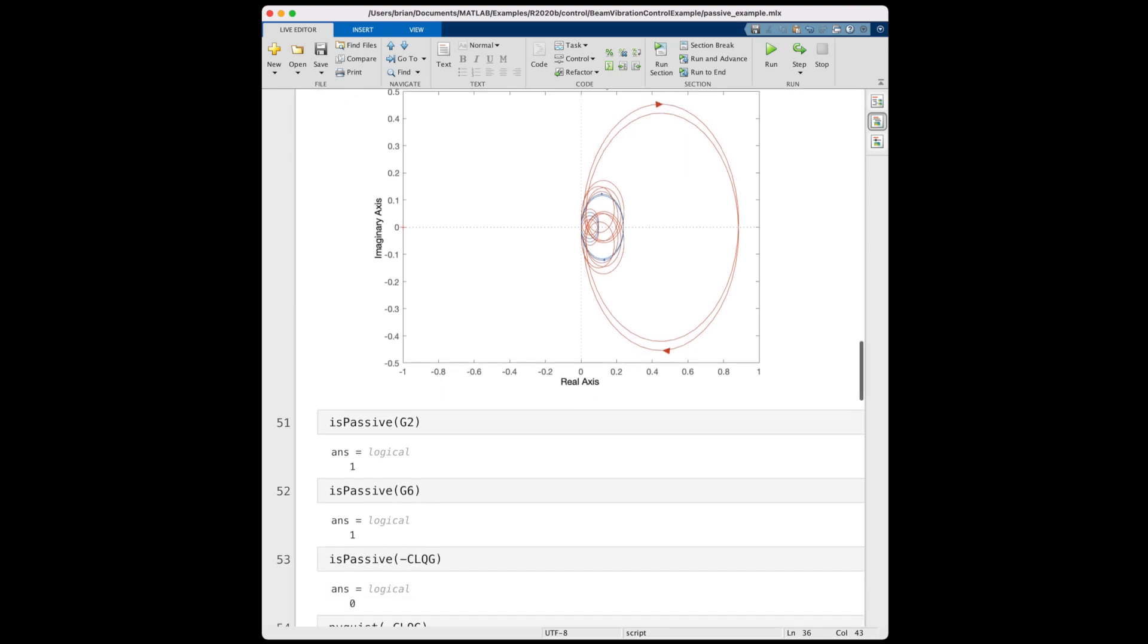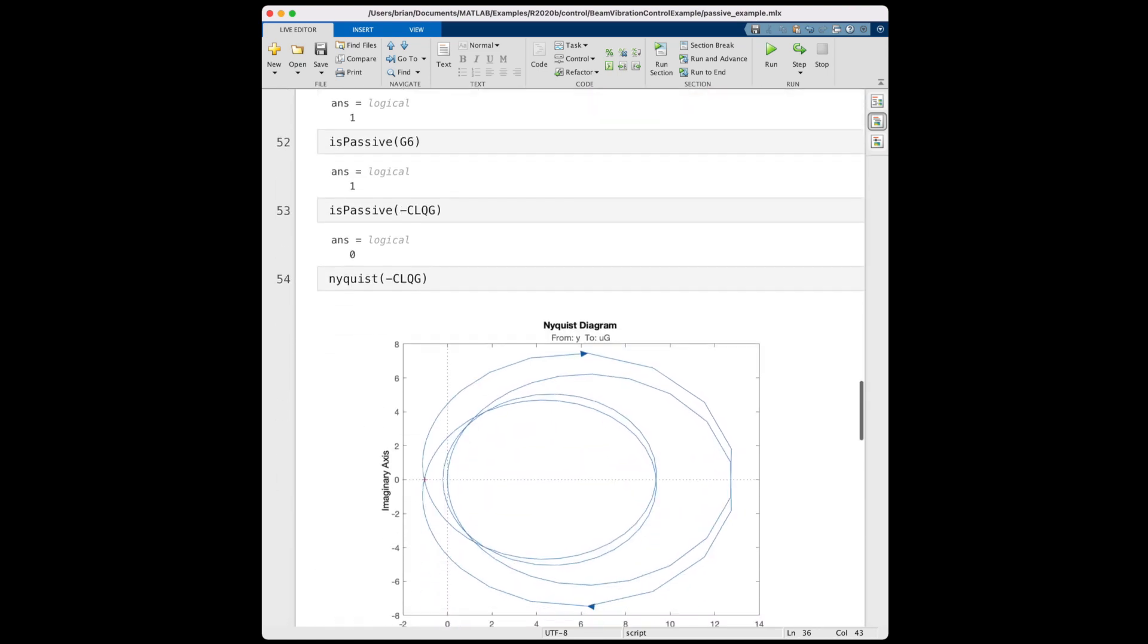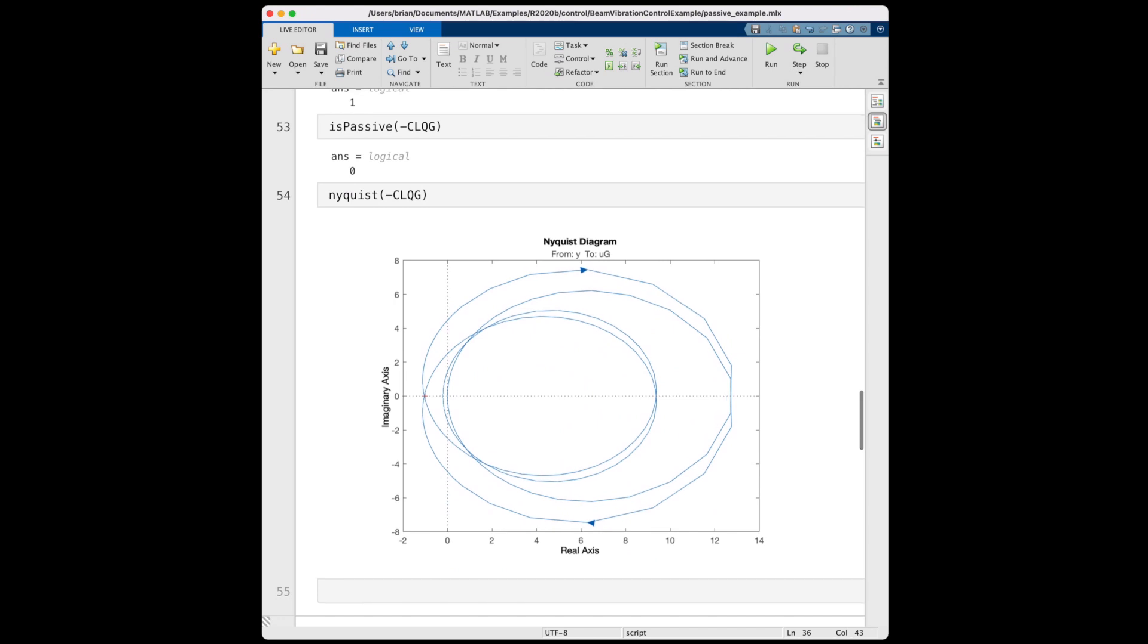And this is the case for both the 2 mode and 6 mode versions. More simply, in MATLAB you can check for passivity of linear systems with the function isPassive. And again, we see the models are passive. And if we check for passivity of the negative of our LQG controller, we can see that it is not passive. The Nyquist plot doesn't reside completely in the positive real plane. This means that using this controller, we can't take advantage of the passivity theorem to guarantee closed loop stability.